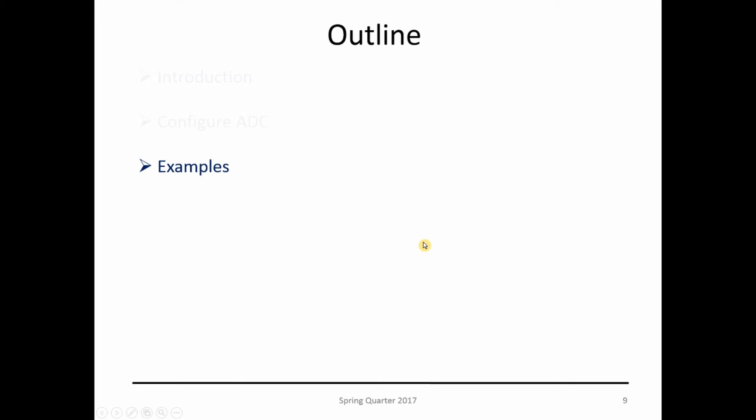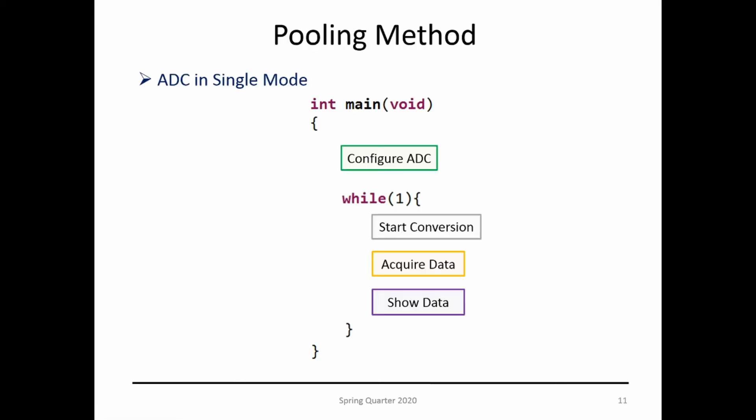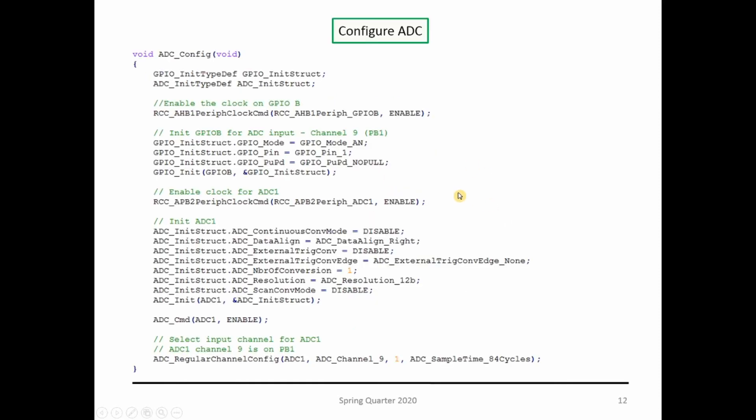Let's look at examples. The polling method: we're going to set up our ADC in single mode. Your int main looks like this—there are no interrupt routines associated with your code. You parameterize the ADC, then you're responsible for starting the conversion, acquiring the data, showing the data, and repeating this loop. If you don't have anything else going on in your microprocessor, that's probably the easiest way to have the ADC running.